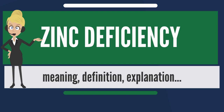Zinc deficiency affects about 2.2 billion people around the world. It results from reduced dietary intake, inadequate absorption, increased loss, or increased use. The most common cause is reduced dietary intake. As much as 25 percent of the world's population is at risk. Increasing the amount of zinc in the soil, and thus in crops, is an effective preventative measure.